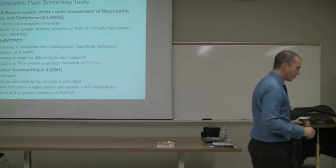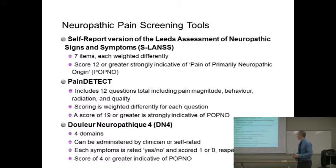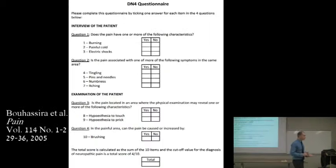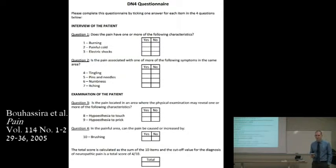The next one is another neuropathic pain screening questionnaire — the DN4. I always hate trying to pronounce it because I butcher the French language, so apologies to anyone who speaks French. The DN4 is another neuropathic pain screening questionnaire that you can either administer as a clinician or have the patient choose their yes-no responses. Every yes scores one point, and a score of four or greater suggests pain of primarily neuropathic origin. I prefer the SLANs, but the DN4 gives you the same kind of information.